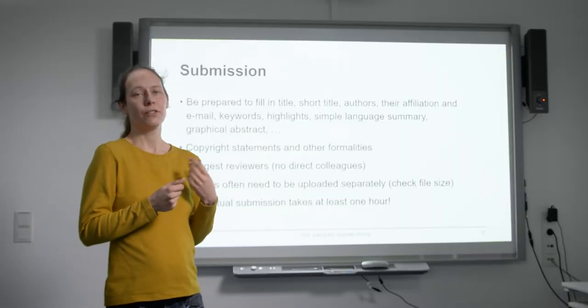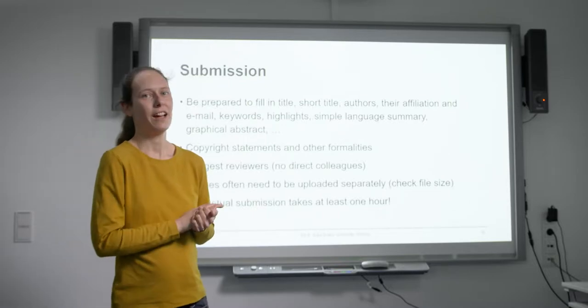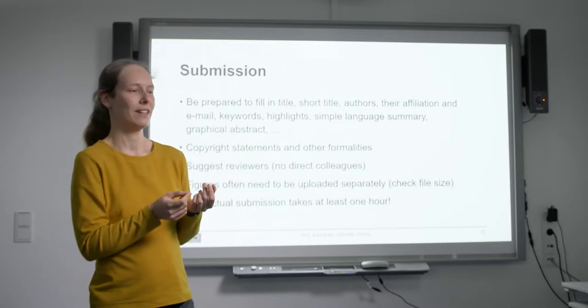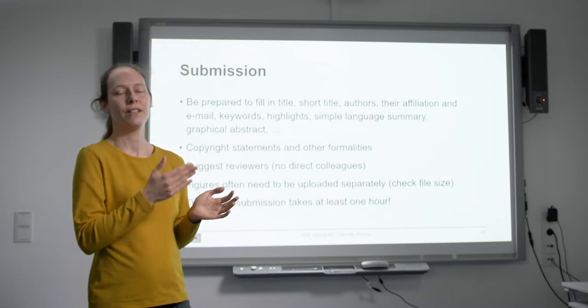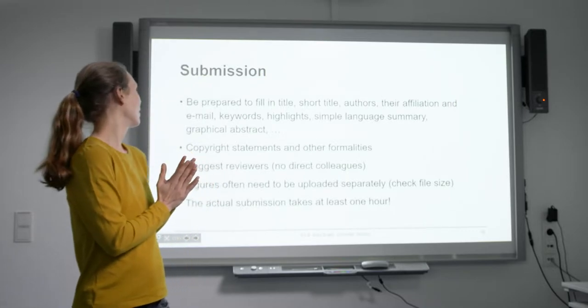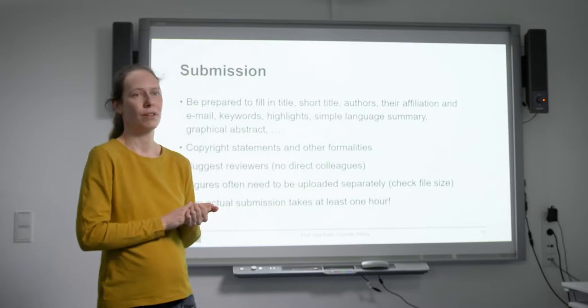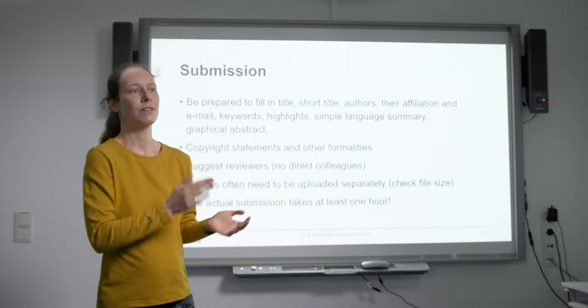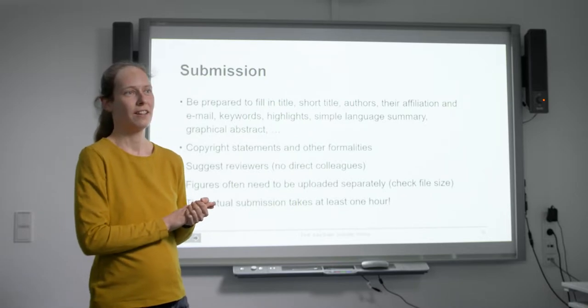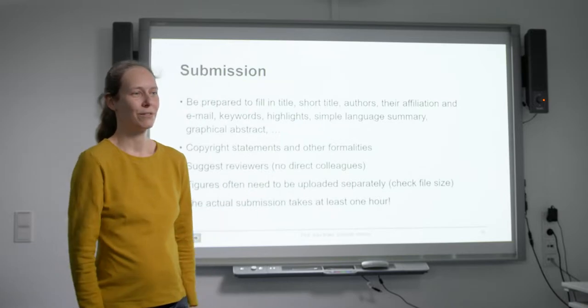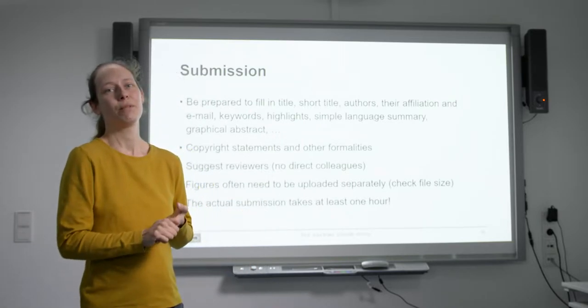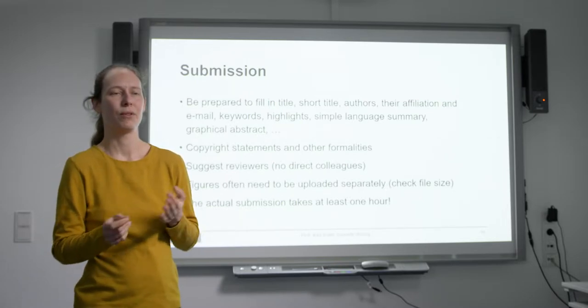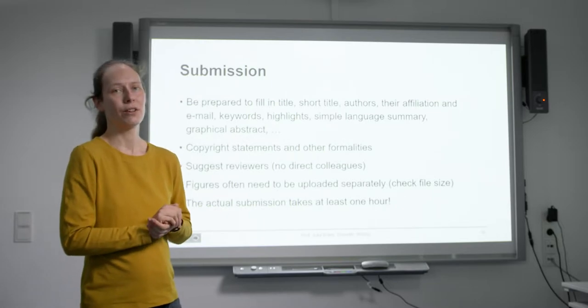Then you go to the journal's webpage, create an account, do the submission, and be prepared to fill in a lot of information again. You think it's all in the paper but they want it separately. For example the title, a short title, the names and affiliations and contact information of all authors. Then you need keywords, they ask for highlights most often, and sometimes other things like graphical abstracts. Of course you find out all this information before if you check the author's guidelines. Don't be shocked when they suddenly ask for highlights and you don't know highlights for your paper. Better prepare that beforehand, but usually you can save what you did and go back and work on it, then continue with the submission.